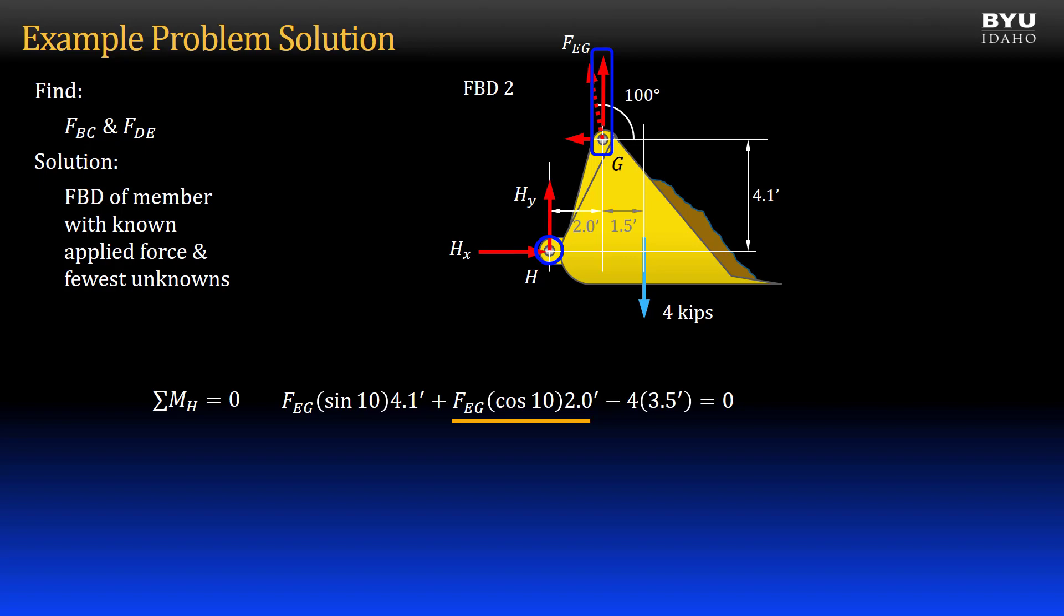I also include the vertical component of force EG, which is FEG times the cosine of 10 degrees times its moment arm, 2 feet. It is also positive. Minus the applied force times its moment arm, 3.5 feet, all equal to zero.